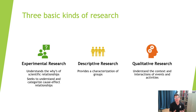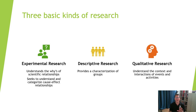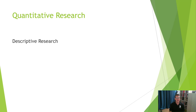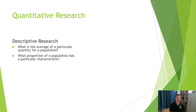We're going to focus on the other two — experimental and descriptive — because those are the ones we can use quantitative methods for. Qualitative research uses totally different methods. So let's take a look at the two kinds of quantitative research. Descriptive research looks at things like what is the average of a particular quality for a population.